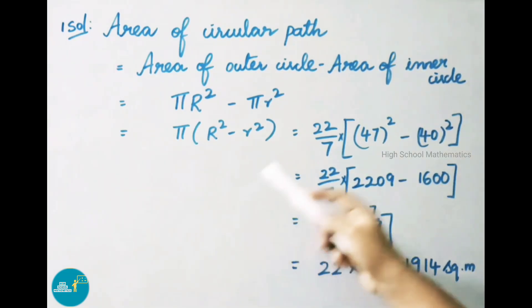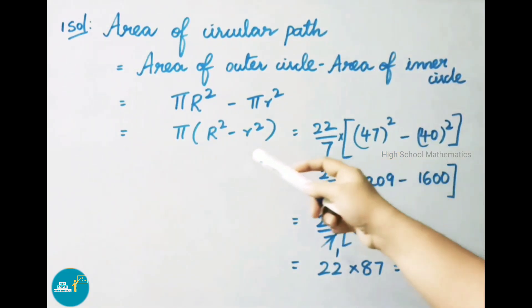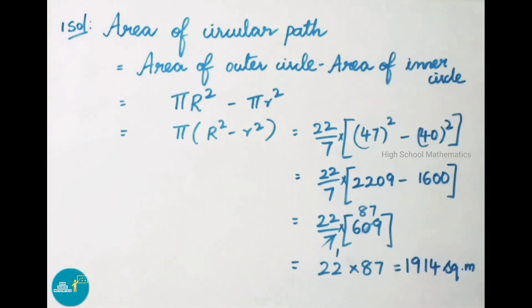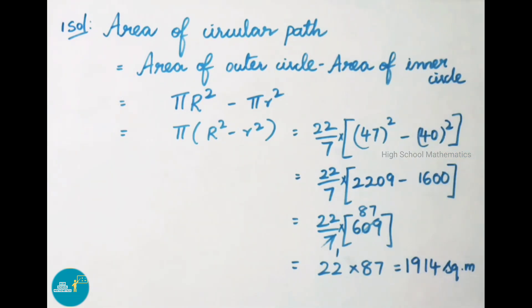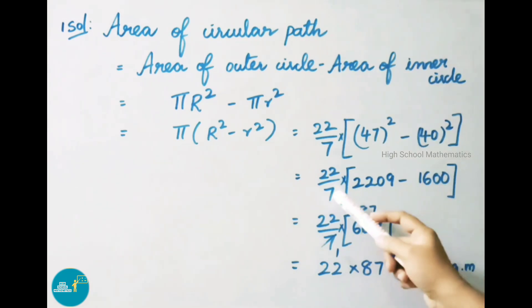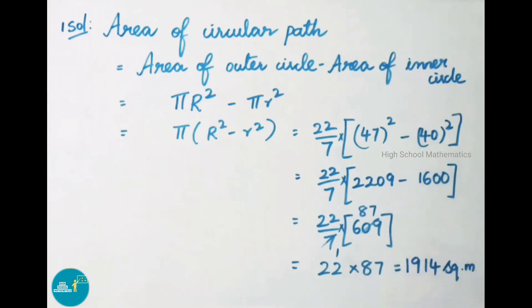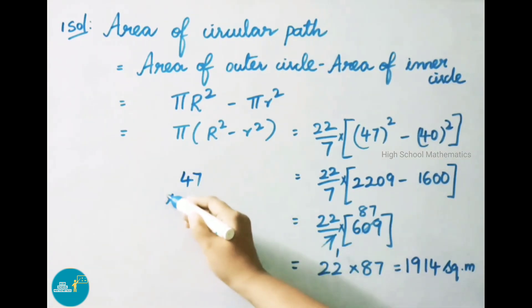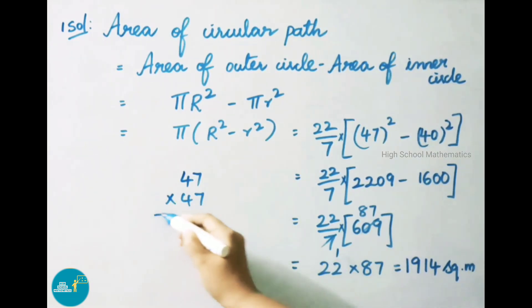That equals 22/7 into (R² − r²), where capital R is 47 meters and small r is 40 meters. So we write 22/7 into (47² − 40²). 47 whole square means 47 multiplied 2 times, so 47 into 47.